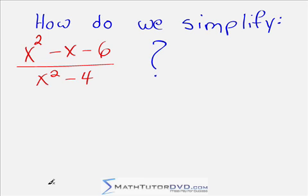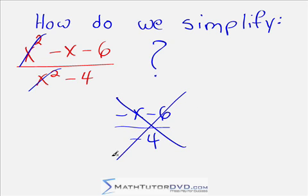A lot of students will look at a problem like this and immediately try to cancel the x squared with the x squared and then they might end up with negative x minus 6 over negative 4 or something. Well that is not correct. You cannot cancel this x squared with this x squared.